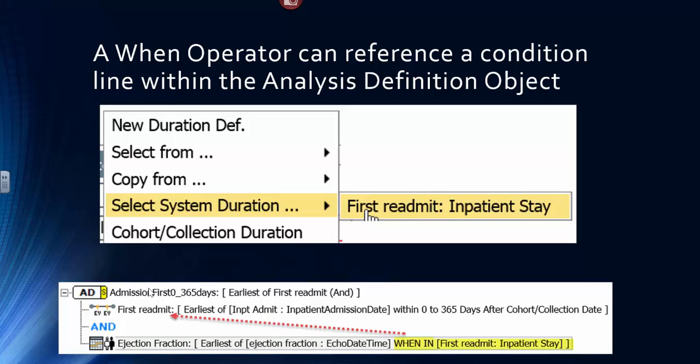So in this example, you can see, this is the analysis definition canvas. You have the first line, first readmission, and this is actually pointing outside to the cohort. But the second line, which is a when in, is saying, I want to get those echoes that occurred during the inpatient admission, which is the first condition line of the analysis definition.